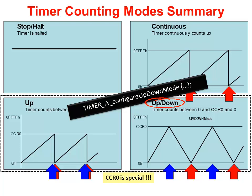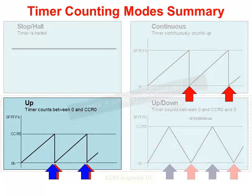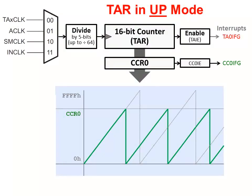Notice how the timer can generate interrupts every time the counter hits a rail — that is, each time it changes direction. Let's take a closer look at the up mode configuration. The up mode differs from continuous mode by resetting back to 0 whenever the counter matches CCR0, the capture and compare register 0. You can see this with the green line shown here: it counts up to the value in CCR0 and then resets back to 0. The gray dotted waveform shows how, in continuous mode, the counter goes past CCR0 all the way up to 0xFFFF.